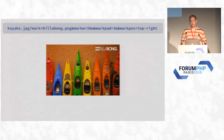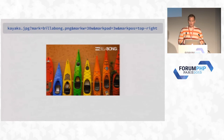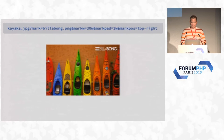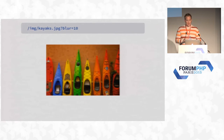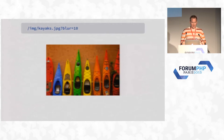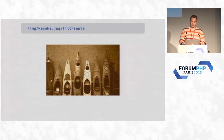Glide also supports watermarks, with a whole slew of features around watermarking: where it sits on the image, how big it is, and the padding from the edge — that's another new feature in version one that a lot of people asked for. It also does some more edge-case effects like blurring and pixelation.